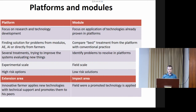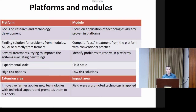What is the difference between all these components? A platform is really a trial — the focus is on research and technology development. We try to find solutions for farmer problems that come up in modules, extension areas, or directly from farmers. We evaluate several treatments and try to improve the local production system, working on an experimental scale with smaller plots.